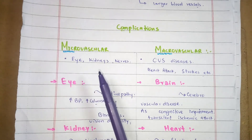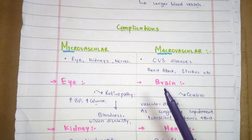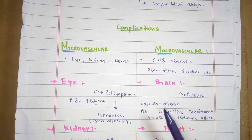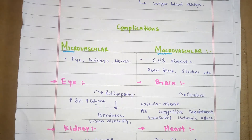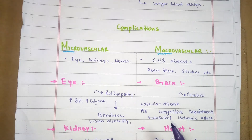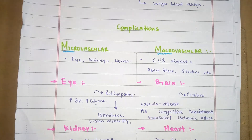In the case of macrovascular diabetes, the brain is involved through cerebrovascular diseases. Due to damage of the larger blood vessels, there is an increased risk of stroke and cerebrovascular diseases. Cognitive impairment and transient ischemic attack may also result from cerebrovascular diseases.